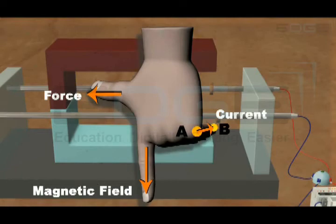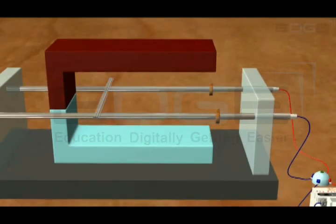So the force exerted on the conductor should be towards the left, which is the same as we observed in our experiment.